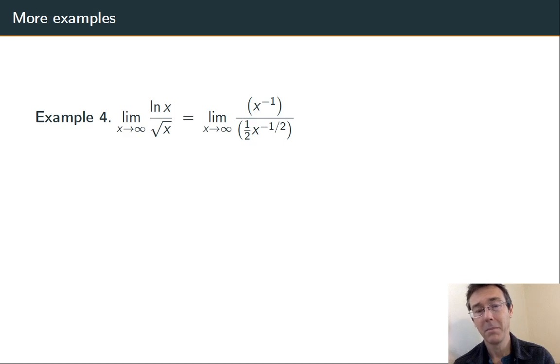Keep the limit the same, differentiate the top, differentiate the bottom. x to the negative first, over 1 half x to the negative 1 half. Now, as x goes to infinity, this is a 0 over 0 form. This is an indeterminate.